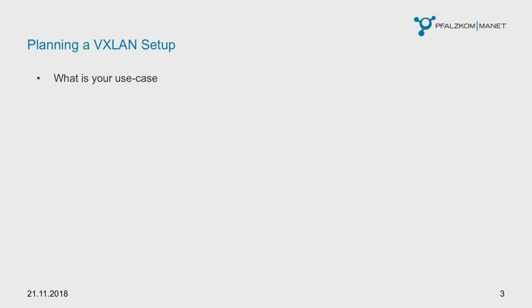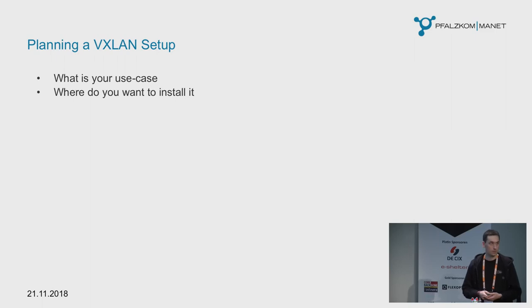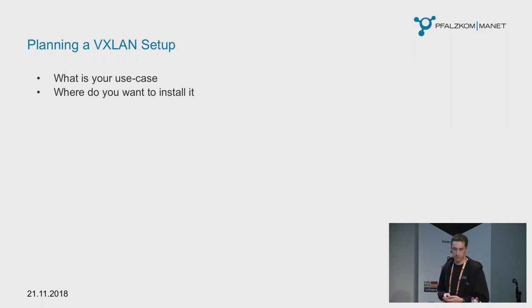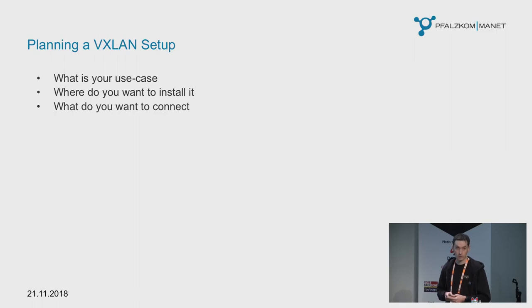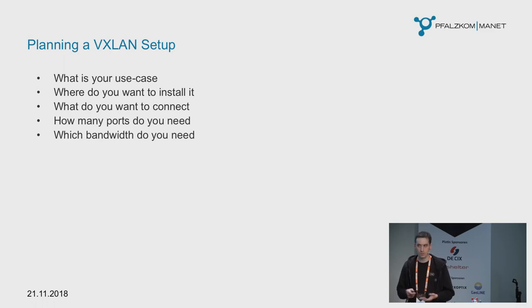If you want to do a VXLAN setup, you need to know what you want to do: what is your use case, why do you want to do VXLAN, or a network where VXLAN might be an option. Where do you want to install it? Most of the time it's going to be in a data center, so there aren't so many space restrictions. But if you would like to use it more in a carrier backhaul network, then you have smaller cabinets which might be a problem. What do you want to connect — a customer or your own servers? How many ports do you need? What bandwidth do you need?